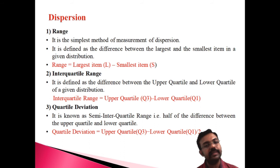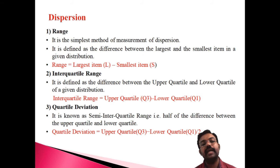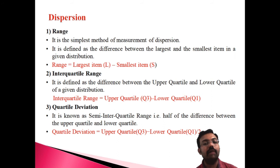The second measure of dispersion is the inter-quartile range. The inter-quartile range is the difference between the upper quartile (Q3) and the lower quartile (Q1). Q1 is the first quartile, Q2 is the second quartile (median), and Q3 is the third quartile. Q3 minus Q1 is the inter-quartile range.